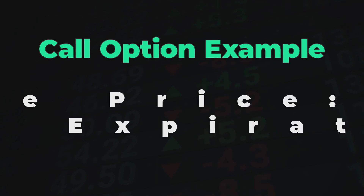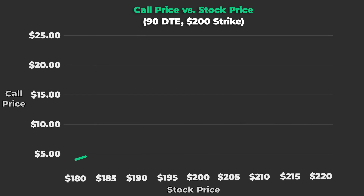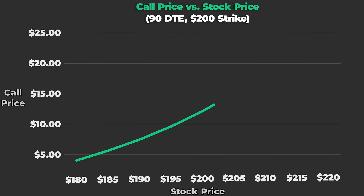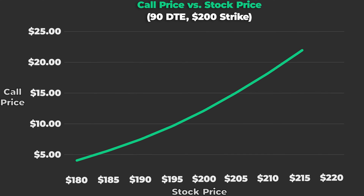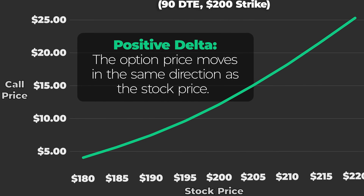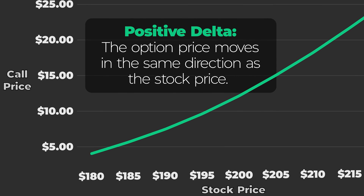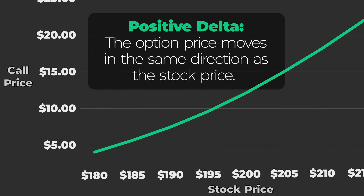Consider a call option with a strike price of $200 and 90 days until expiration. The call price increases when the stock price rises and the call price falls when the stock price declines. This is because call options have positive Deltas, meaning the call option's price will move in the same direction as the stock price.